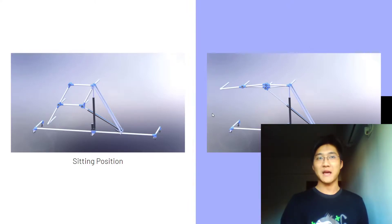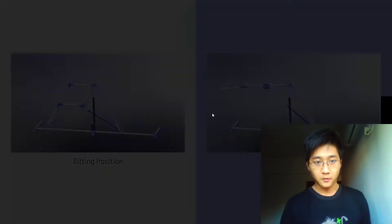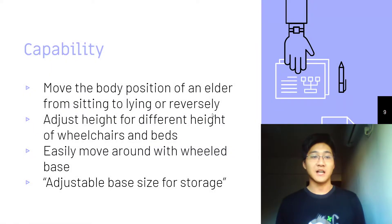And you can switch back also. So with this design, we only need one push rod to achieve two ideal positions. Our mechanics design ensures that our robot is capable of moving the body position of a holder from sitting to lying or reversely.